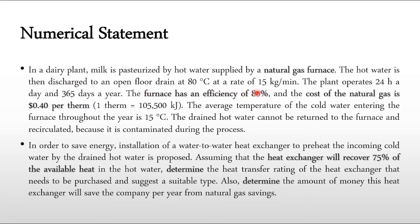The plant operates 24 hours a day and 365 days a year. The furnace has an efficiency of 80% and the cost of natural gas is $0.4 per therm, where one therm equals 105,500 kJ. The average temperature of the cold water entering the furnace throughout the year is 15°C, and the hot water exits helping in pasteurization then is drained at 80°C at 15 kg/min.